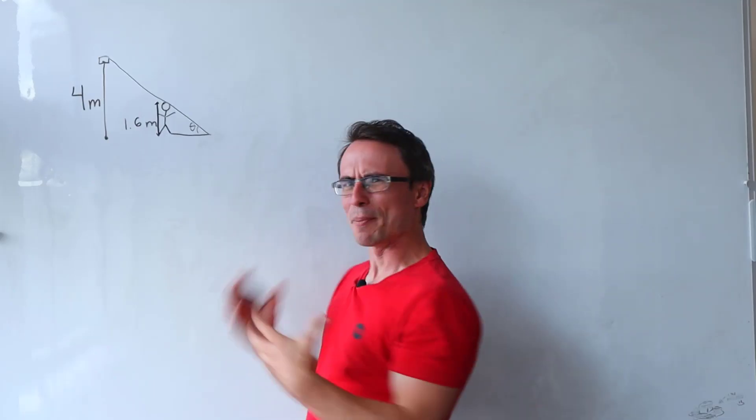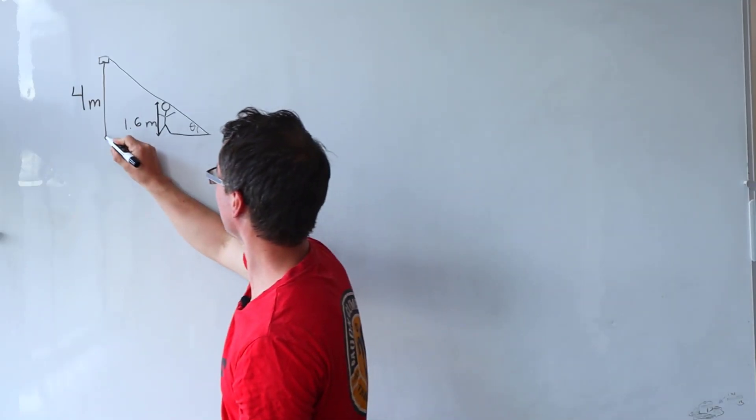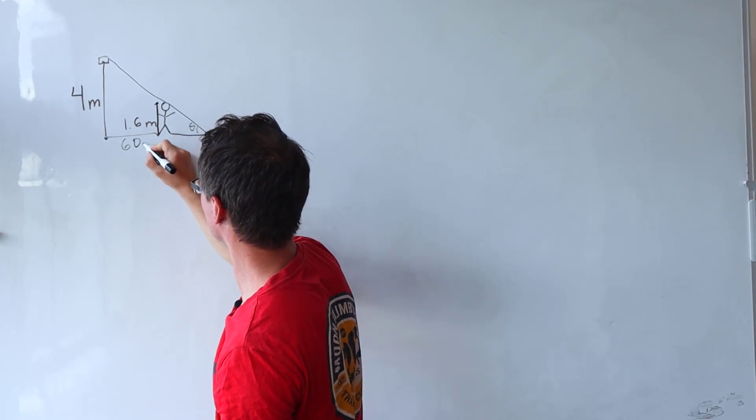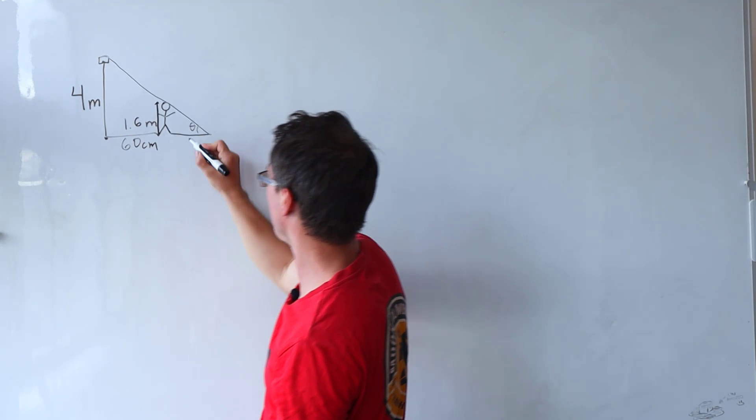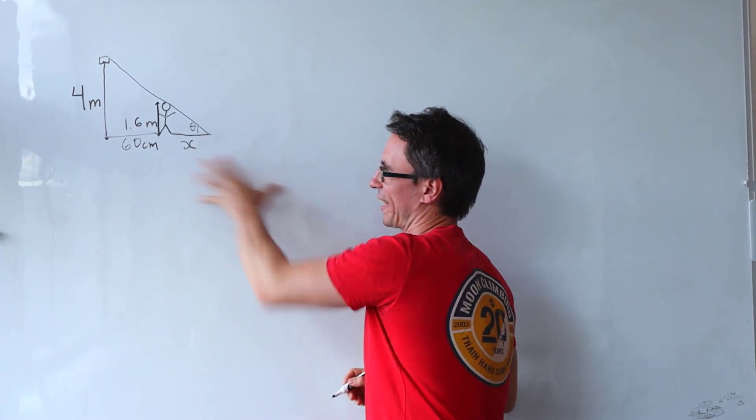And if they're moving at 60 centimeters per second, this distance here should be just 60 centimeters. We have some unknown distance here which I'm just gonna call that distance x.